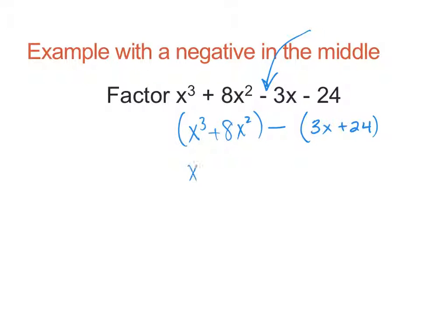So my first group has an x squared as a common factor. What's left? x plus 8. My next group has a 3. What's left? x plus 8. Notice these are both x plus 8s. They are exactly alike.